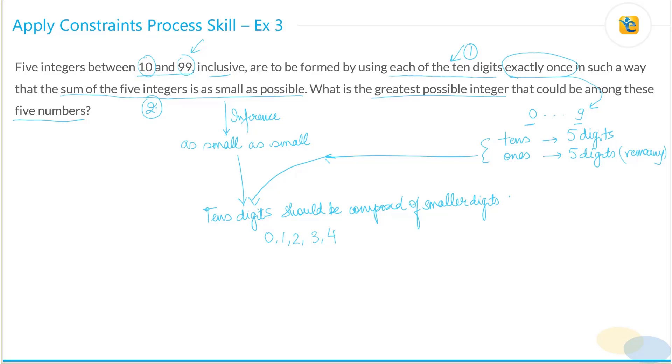But remember, we have five integers that are between 10 and 99. So this information also imposes a constraint. Your tens digit cannot be zero because if your tens digit is zero, then there's nothing in the tens place.